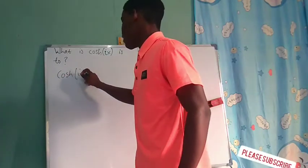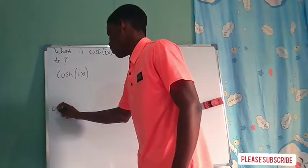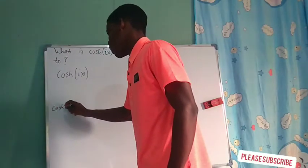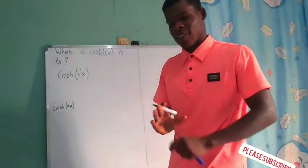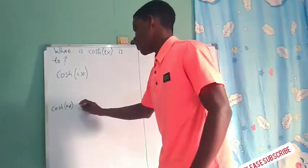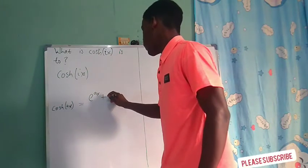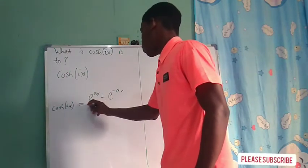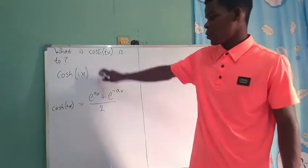Cosh of ix. Well, I believe you know that cosh of Ax, where A is any constant value, is equal to e to the Ax plus e to the negative Ax over 2. So we can make use of this to evaluate this.